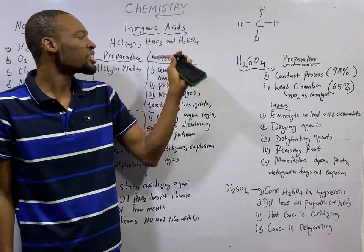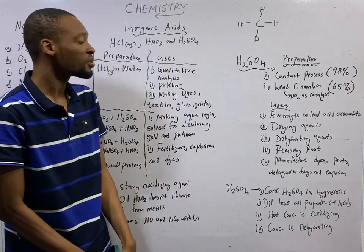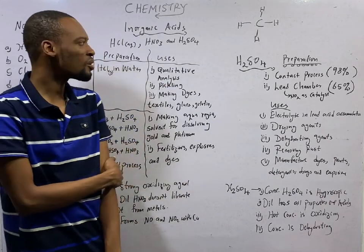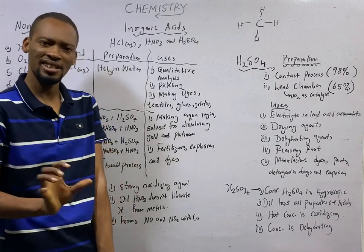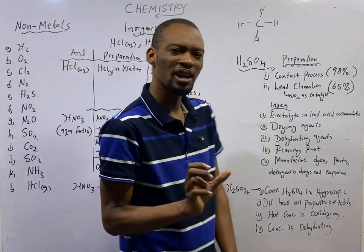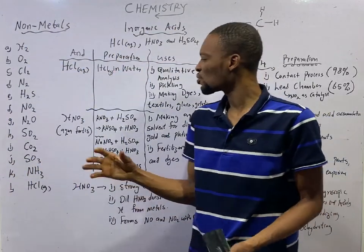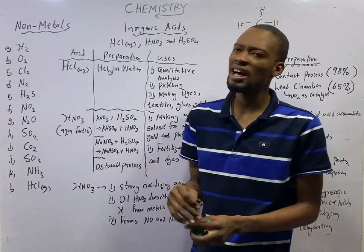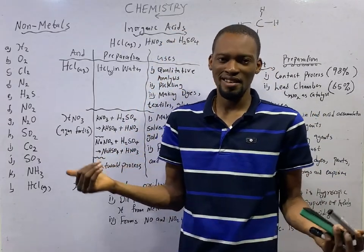Then, JAMB expects you to know HNO3, trioxonitrate(V) acid, and H2SO4, tetraoxosulphate(VI) acid. These are the hot cake inorganic acids JAMB expects you to know. You need to know how they are prepared, their uses, and facts about them.